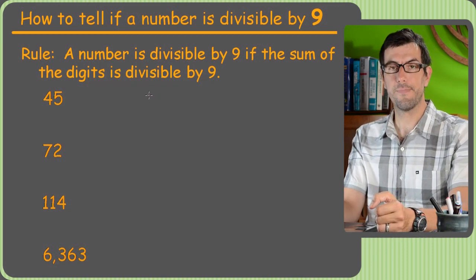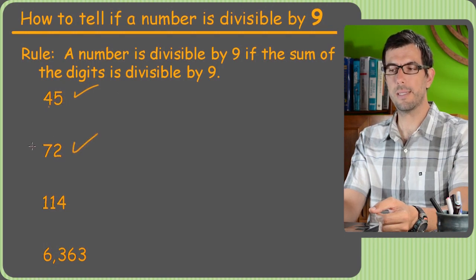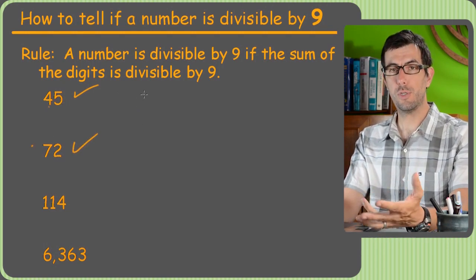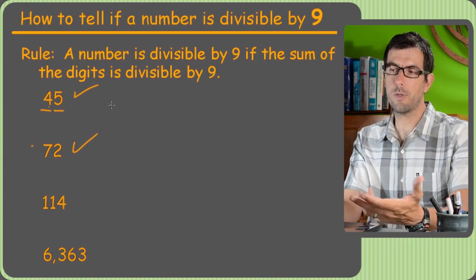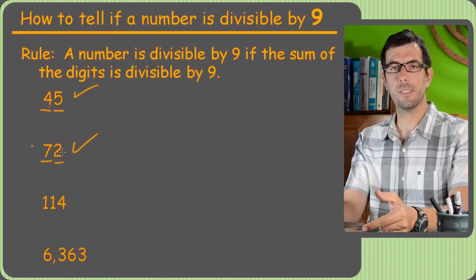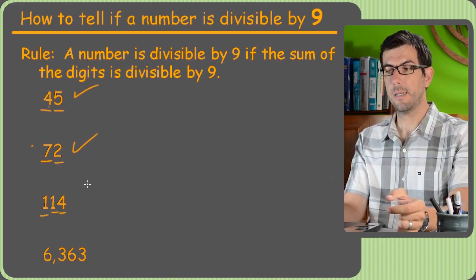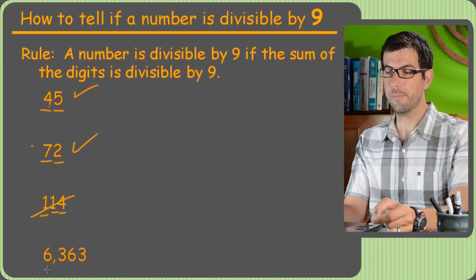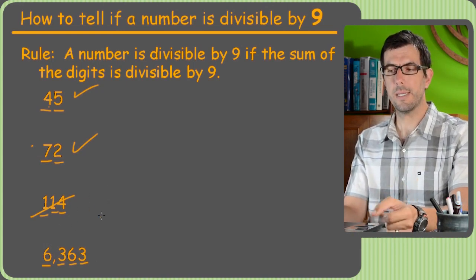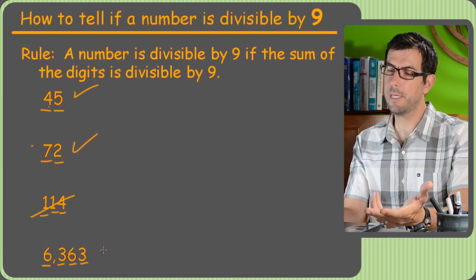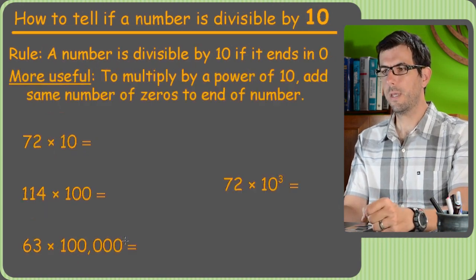All right, so divisibility by 9. Pretty much, you want to know your times tables for 9. So 45 and 72 are on there. This is 5 times 9 and 8 times 9. Other than that, though, we can use the digit rule kind of like for 3. You just add up the digits. 4 plus 5 is 9, and 9 is divisible by 9, obviously, so it works out. 72, 7 plus 2 is 9. 9 is divisible by 9. 1 plus 1 plus 4, 6. Not divisible by 9, so no deal. Here's a big one. 6 plus 3 plus 6 plus 3 is 18. Is 18 divisible by 9? Got to know your times tables. 2 times 9 is 18, so yes, in fact, this one is divisible by 9. Pretty sweet.